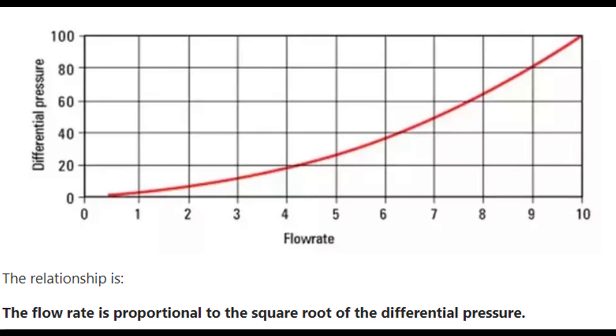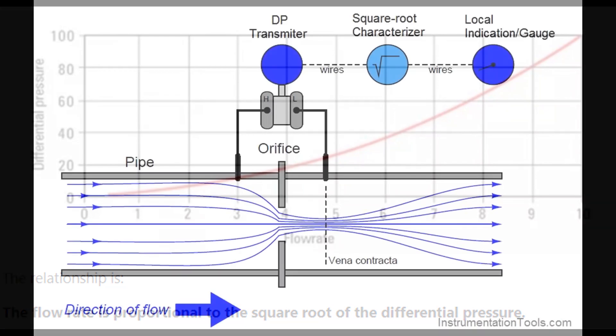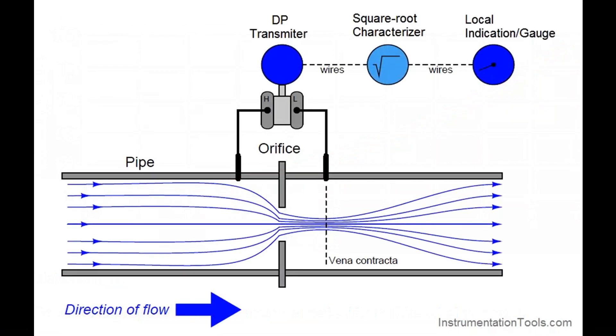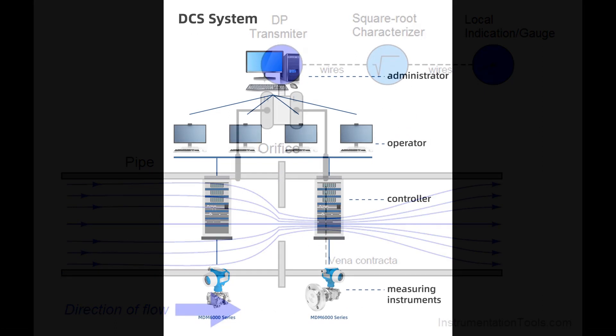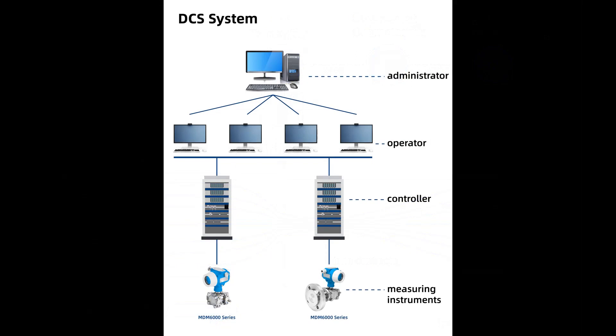Some DP transmitters include temperature and pressure sensors to compensate for variations in fluid properties, ensuring accuracy over a range of operating conditions. The output signal is transmitted to a control system, data logger or other device for further processing and monitoring.